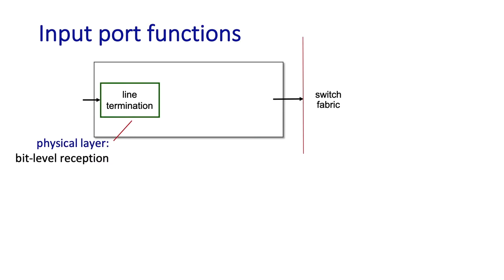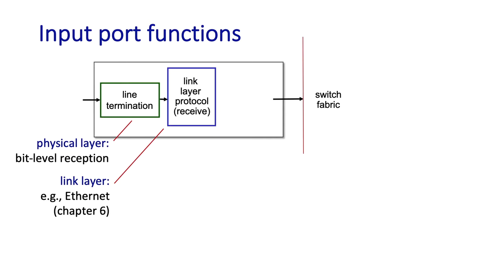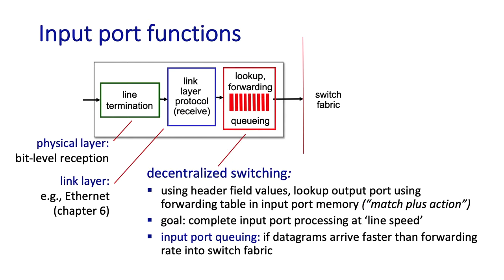Let's now zoom in on the input port. Starting from the left: shown in green is the line termination function — this is really the physical layer, responsible for receiving bit-level transmissions over the physical medium, whether it be copper, fiber, or wireless. Then there's the link layer function, shown in blue, where bits are assembled into link layer frames like the Ethernet frames we'll study later. Finally, shown in red, there are the network layer functions at the input port. Packet queues may form here, but the most critical function is the lookup and forwarding function — determining the appropriate output port to which the arriving packet will be forwarded through the switching fabric.